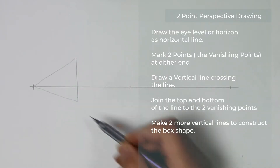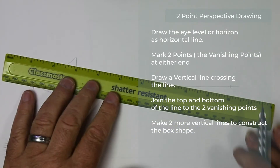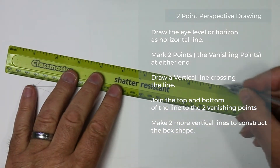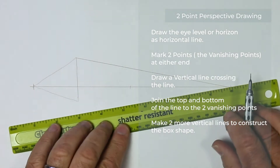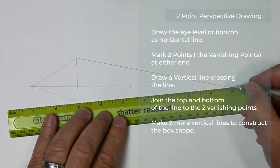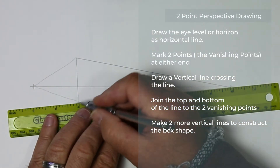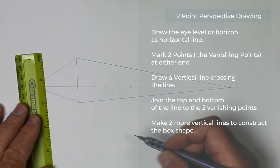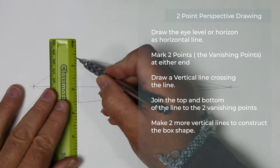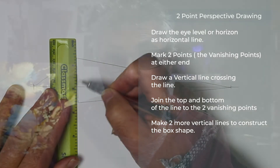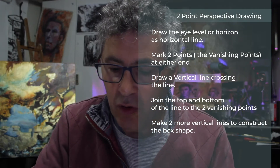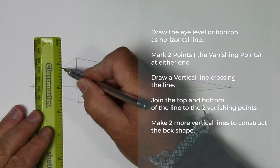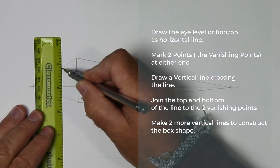We can use a ruler to do this because the lines sometimes end up being quite long. Use a ruler quite faintly to join up the lines of our shape, which is going to be a cube shape. We just need to remember that vertical lines are always going to be parallel in this instance.